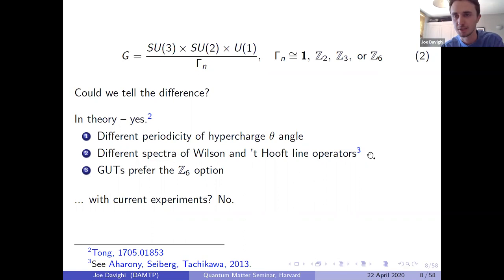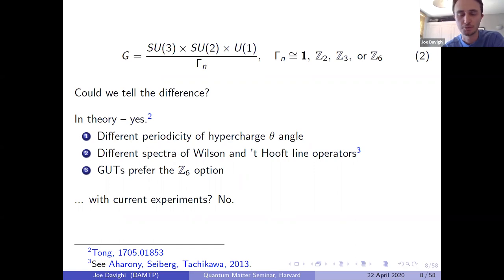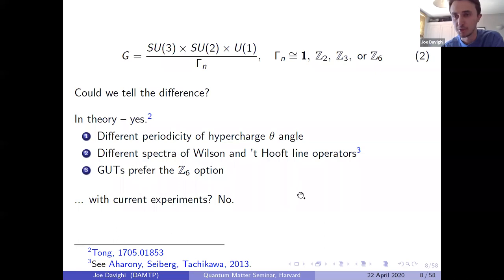Wilson and 't Hooft line operators can generically occur in all representations of the gauge group. So even though we only see fermions in a small subset of representations, this non-perturbative sector in principle probes all representations of G. If you're inclined towards grand unified theories, they tend to prefer the option with the Z₆ quotient — it fits inside the SU(5) GUT and also the Spin(10) GUT. But with current collider experiments, we're not sensitive to any of these subtle differences.